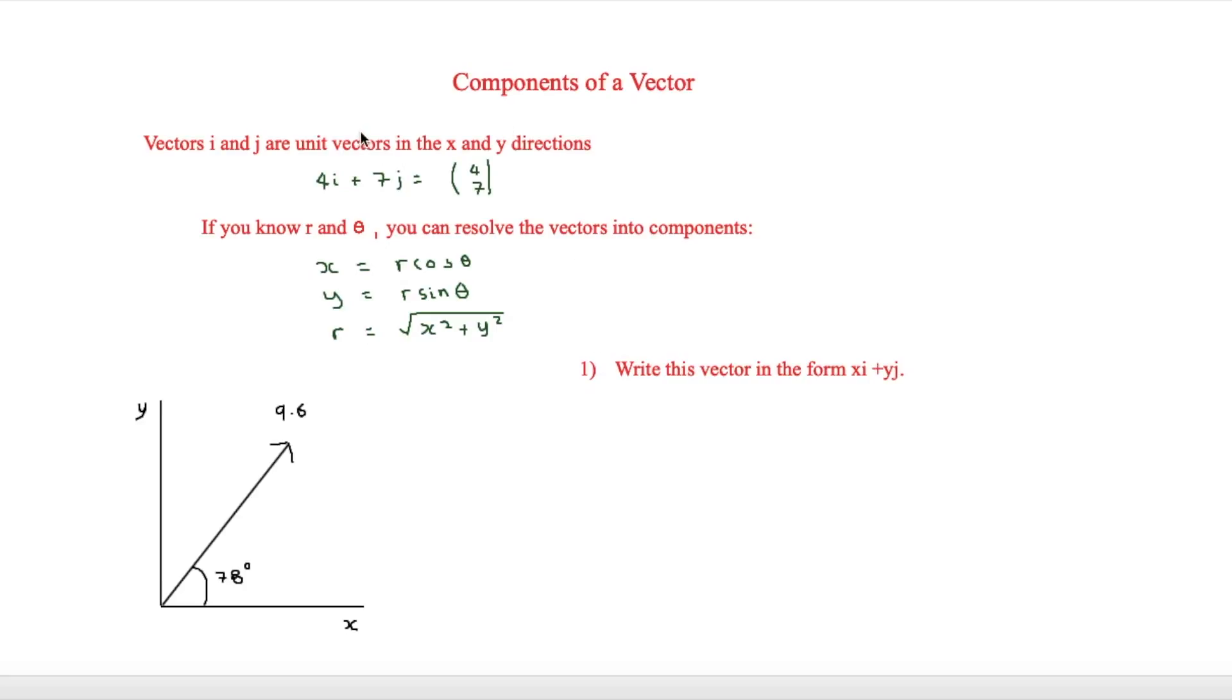So for example, if we have here 4i plus 7j, that's basically equal to 4 across and then 7 up. Now if you know what r and theta are, and theta is normally the angle and then r is this one here, for example there,